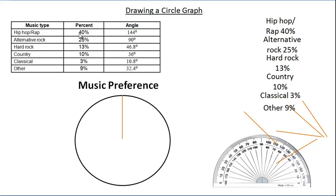Hip-hop at 40 percent, alternative rock 25, hard rock 13, country 10, classical 3, and other 9. If you don't have the percentages, if you have a total instead, then if these were actually the surveyed numbers you would total them up and divide each of those numbers by the total to get the 40 percent or 25 percent or 13 percent.